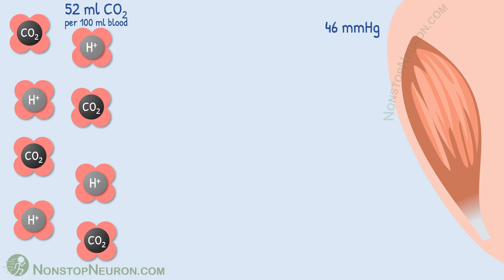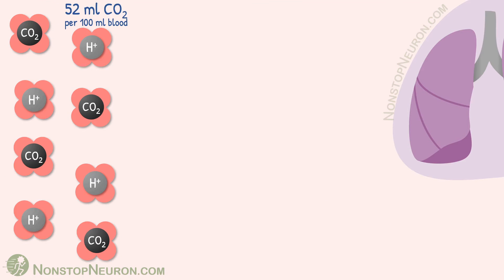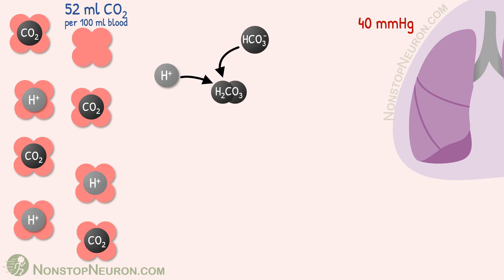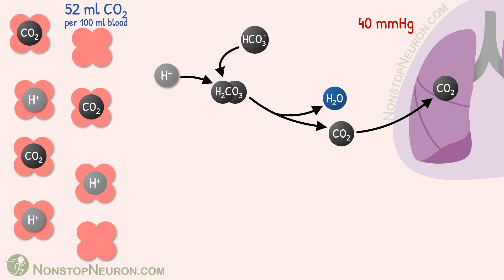The blood from tissues all over the body goes to the lungs. Here, partial pressure of carbon dioxide is about 40 mmHg. Due to the low partial pressure, carbon dioxide diffuses from blood to lungs. The step-by-step process is in fact the reverse of what happens at peripheral sites. Hydrogen dissociates from hemoglobin, then combines with bicarbonate to form carbonic acid, which dissociates to produce carbon dioxide. Carbon dioxide also comes from carbaminohemoglobin, then diffuses into lungs and is removed. At this point, carbon dioxide content of blood decreases to about 50 ml per deciliter. This is all without the Haldane effect.